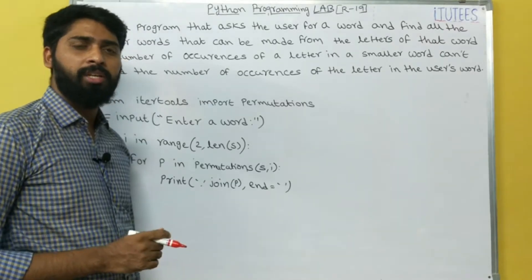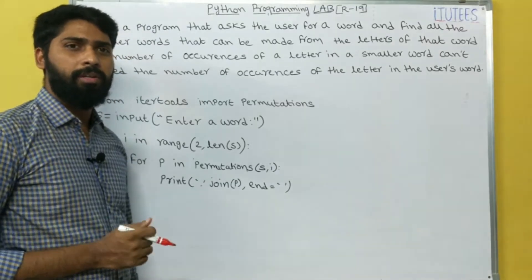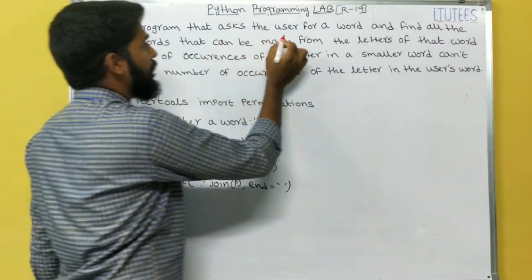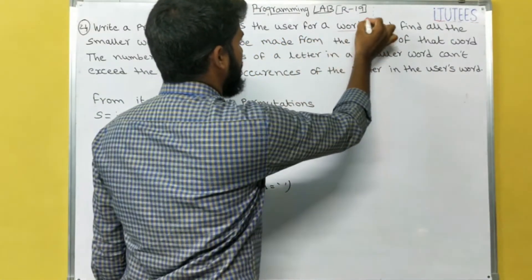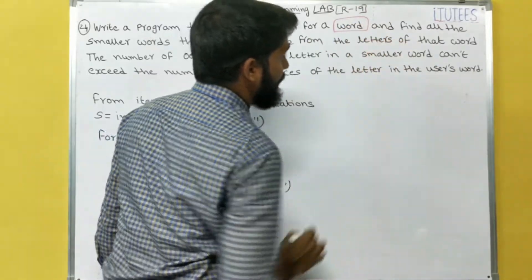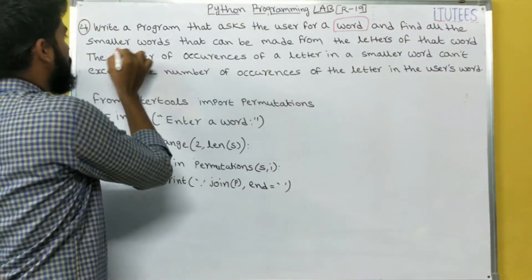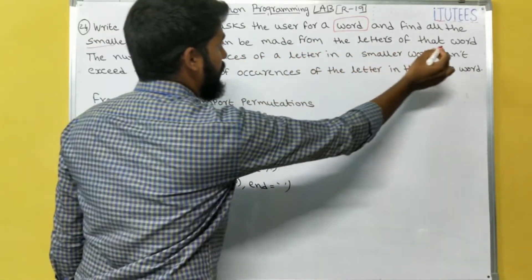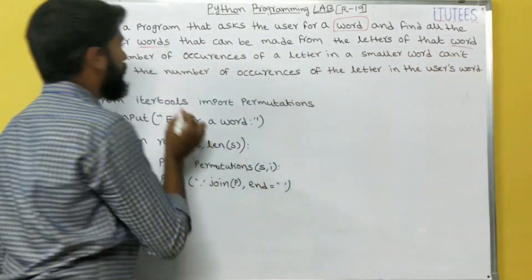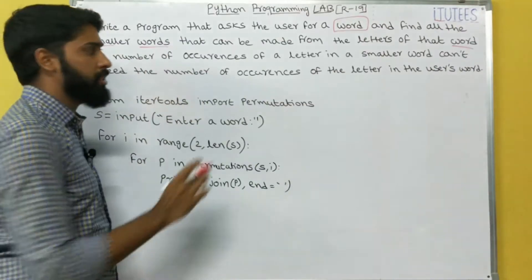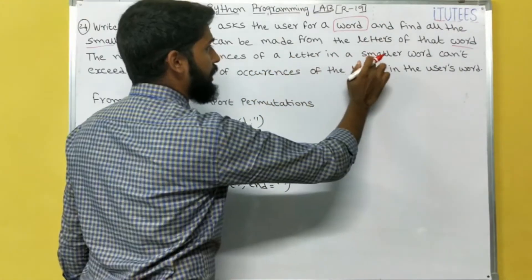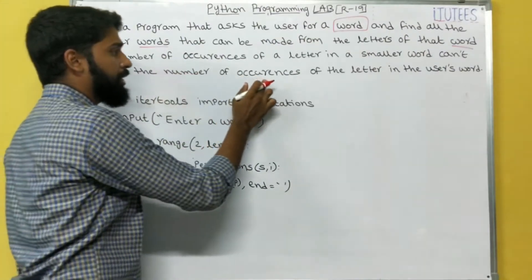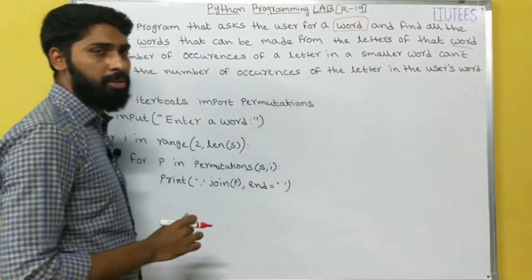Hello friends, welcome to our channel. Now we are going to solve one Python program. Write a program that asks the user for a word, and find all the smaller words that can be made from the letters of that word. The number of occurrences of a letter in a smaller word cannot exceed the number of occurrences of the letter in the user's word.